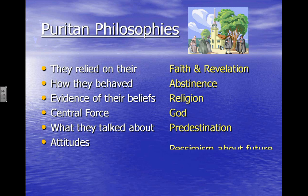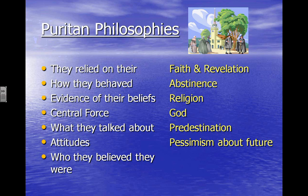With that as a topic of conversation, you might be a little pessimistic about the future — and also pessimistic because of the high mortality rate. Life was hard, and a lot of people didn't make it. Lastly, and this is probably one of the most important and interesting elements of Puritan philosophies: they believed that they were the chosen people. They believed that they, for the most part, were the predestined-for-heaven group — the good guys. Were there people in Puritan society who maybe weren't? Of course. Was there crime? Certainly. But by and large, they believed they were the chosen people.